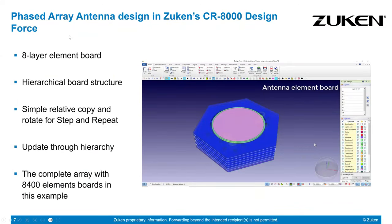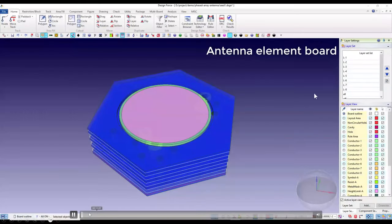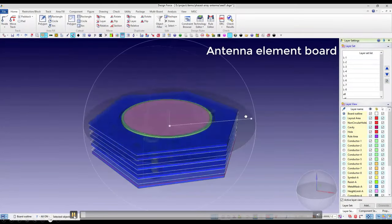In this sample, we essentially have an eight-layer element board. We're going to show usage of this hierarchical board structure, including simple copy and rotate functions, updates propagating up through the hierarchy, and then the complete array with 8,400 element boards in the example. And that looks a little bit like this — here we've got...